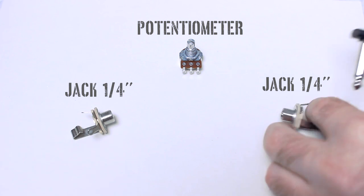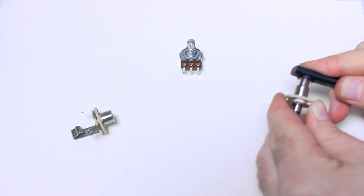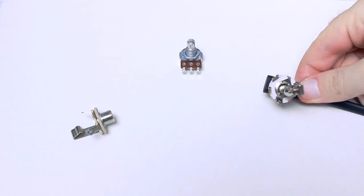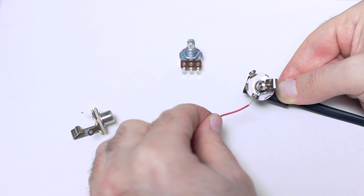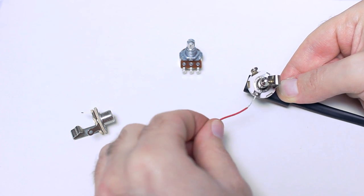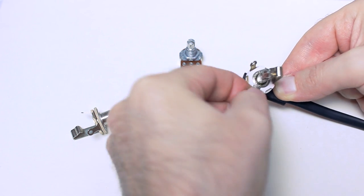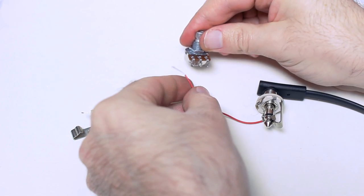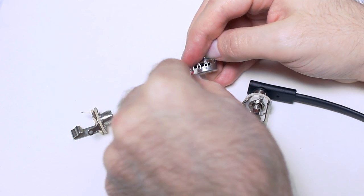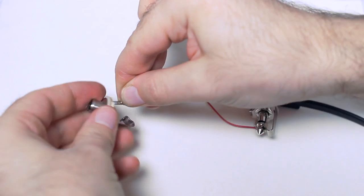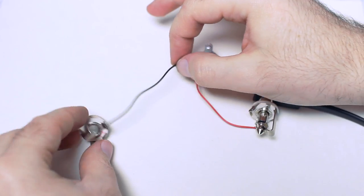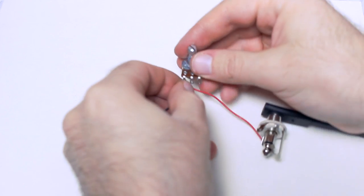To make the process easier I plugged my guitar cable in the jack that will be an input to the pedal. For example, every jack has outer and inner contacts. First connect inner contact of input jack to the left contact of potentiometer. Then connect inner contact of output jack to the same left contact of potentiometer.